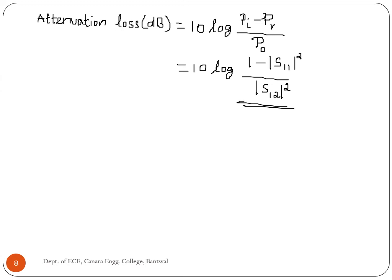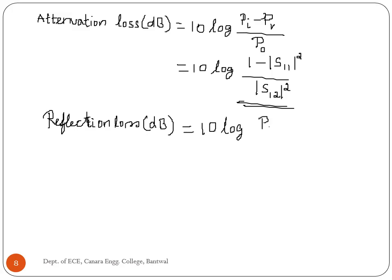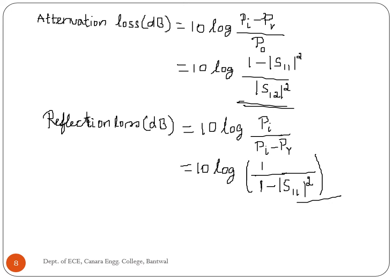S11 is the reflection coefficient at port 1, and S12 is the attenuation of the wave traveling from port 2 to port 1. Next, reflection loss in dB is given by: 10 log(P_I / (P_I − P_R)) = 10 log(1 / (1 − |S11|²)).